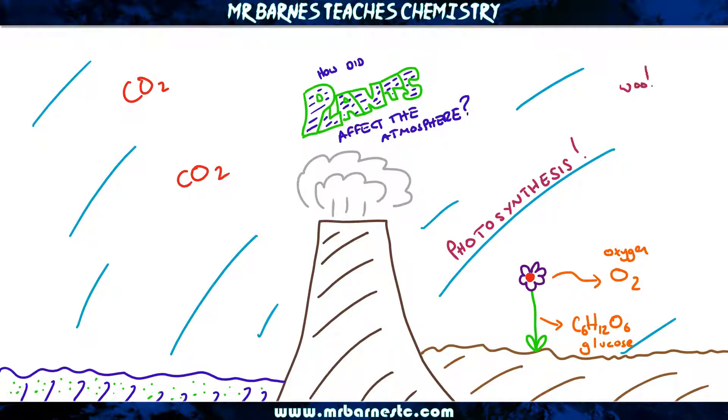The way that affected the atmosphere is straightforward: carbon dioxide levels decreased and oxygen levels increased.